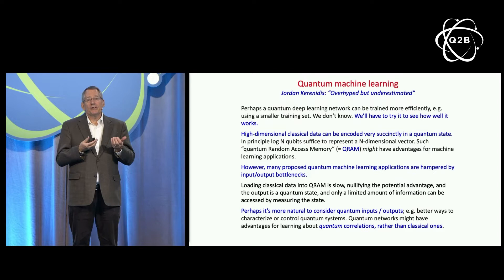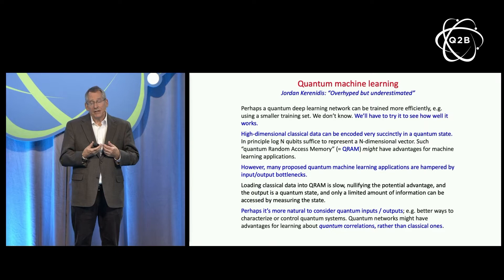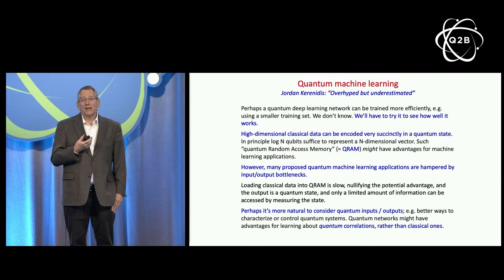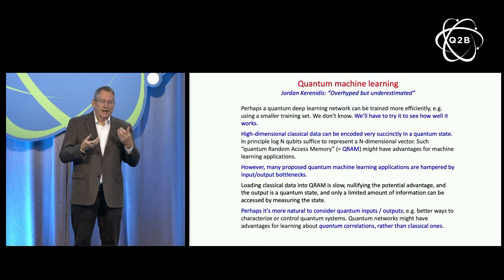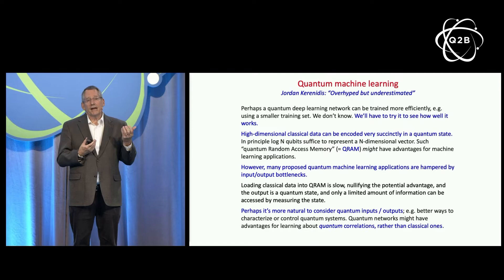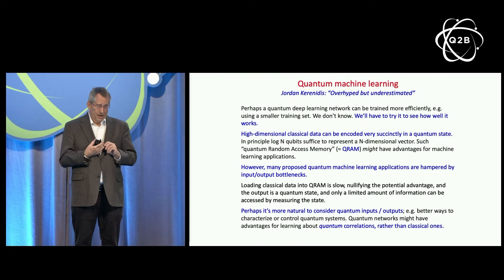There is a lot of interest in the potential of quantum machine learning. It might be the case that a quantum deep learning network would have an advantage over classical deep learning for some applications, but we don't know that's true — we'll have to try. Part of the reason for interest in quantum machine learning is the idea of QRAM, quantum random access memory: we can take a large classical dataset, a very long classical vector, and encode it succinctly in just log-n qubits. But many proposed quantum machine learning applications are hampered by input-output bottlenecks — it can take a lot of time to load classical data into QRAM, which can nullify the potential quantum advantage.